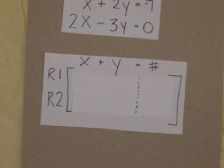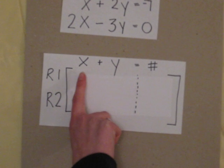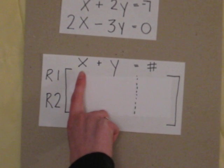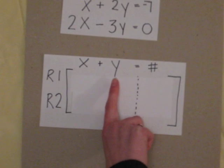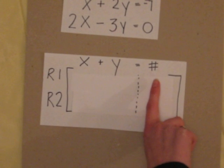Now, I know this looks complicated, but let's go through it. The first column is x. The second is y. And the third is whatever number that equals.